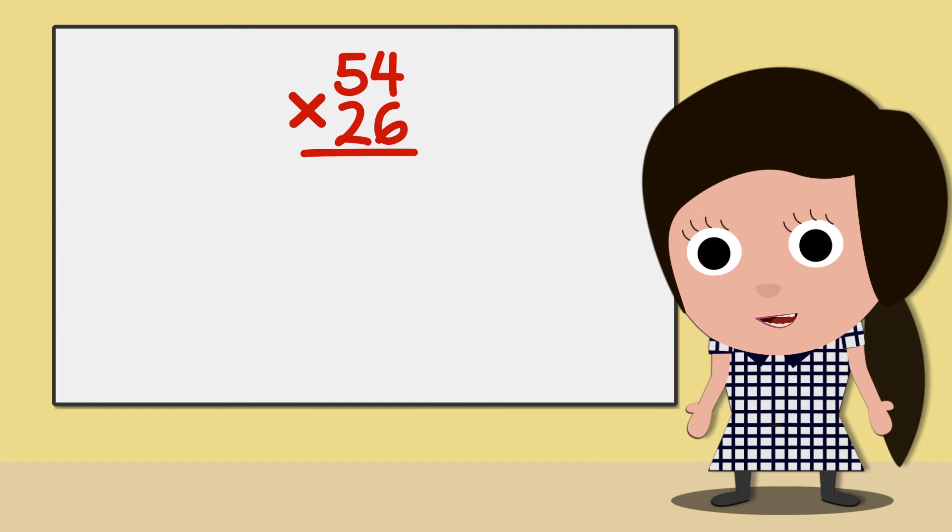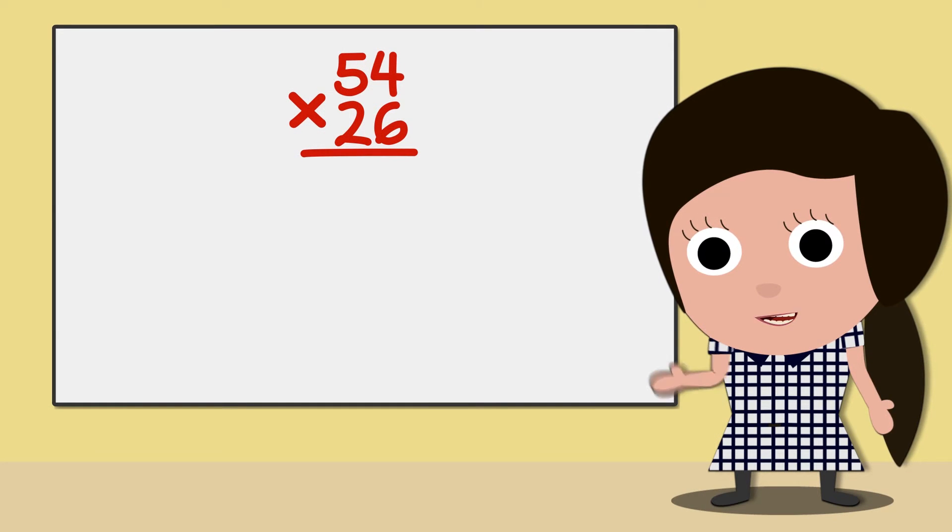To start with, we will multiply the ones. Six multiplied by four is 24. As we are dealing with the ones column, we will record the four in the correct place and the 20 in the tens column.